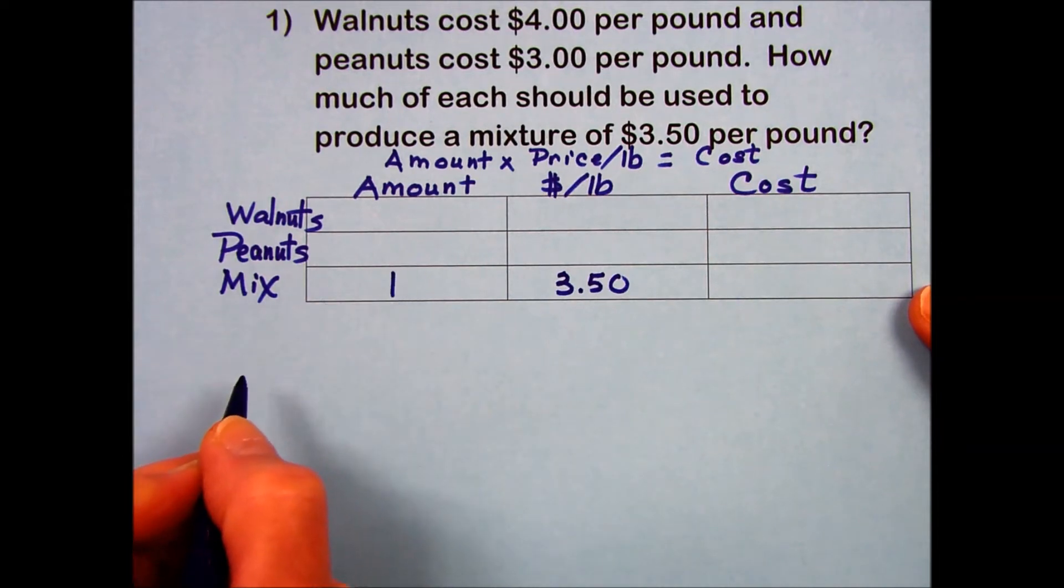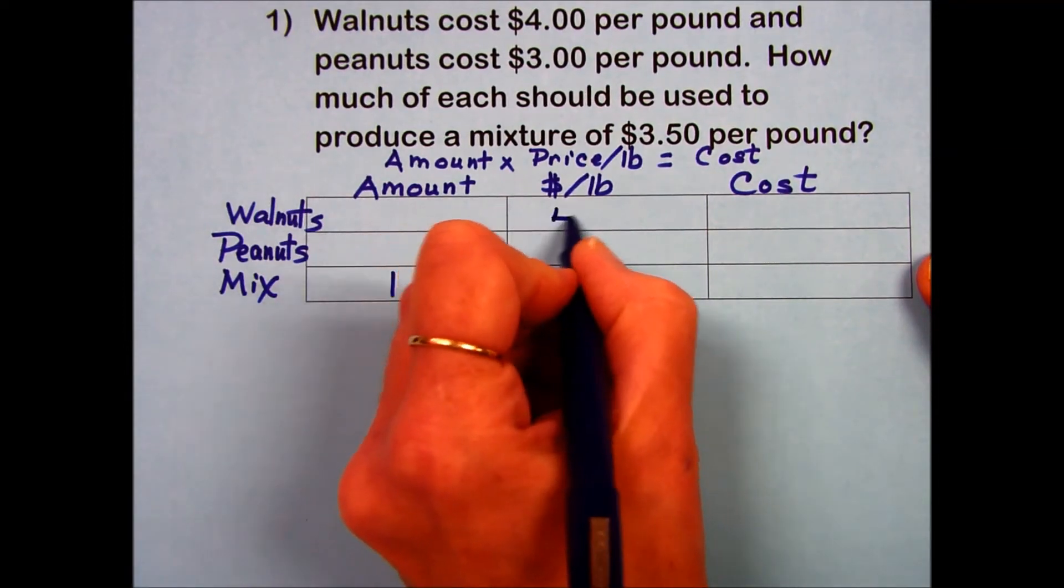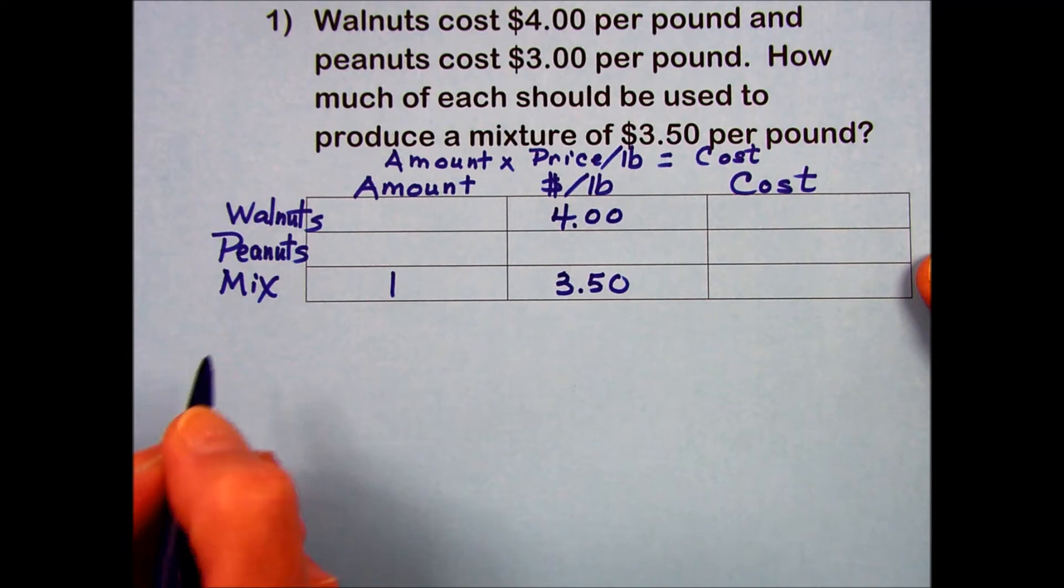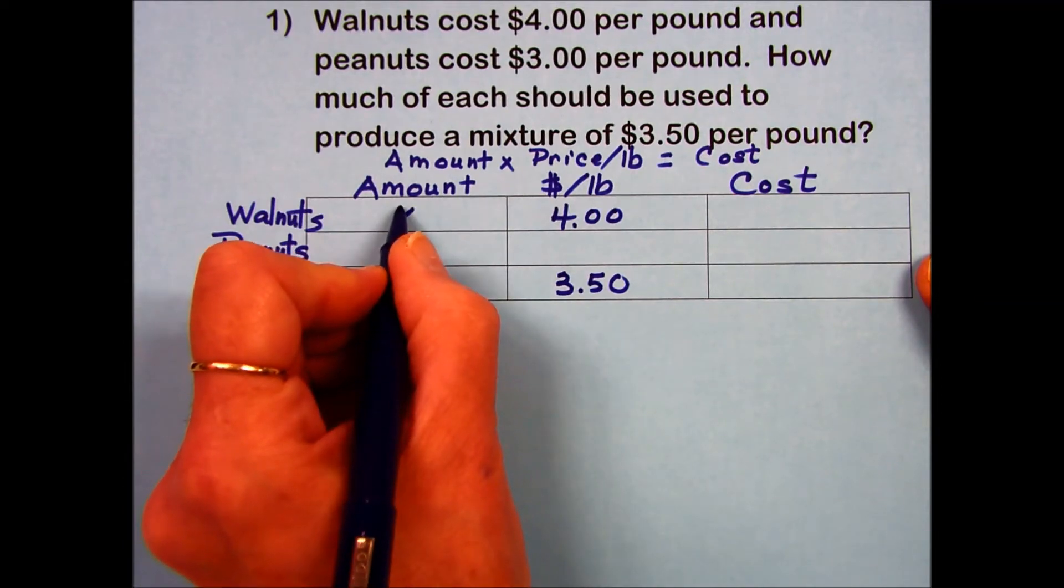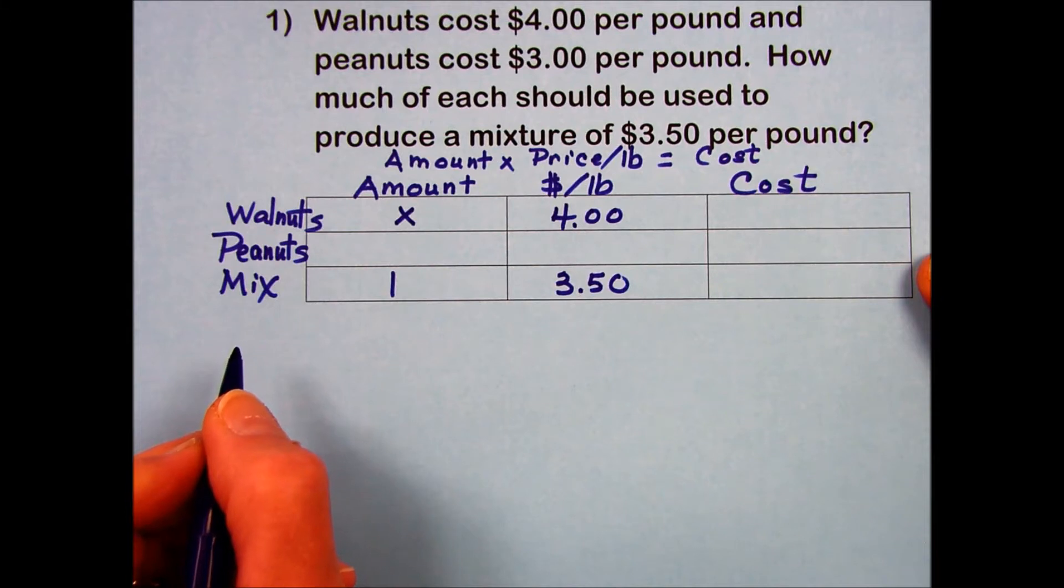Let's say we're going for a pound just to start with and keep it simple. Going back at the top then, walnuts cost $4 per pound. I'll enter that under the price per pound and I don't know how many walnuts. That's the whole question in this problem, how much of each. So I'm going to let that equal x.